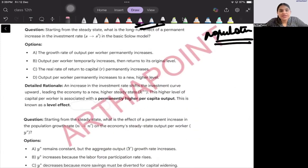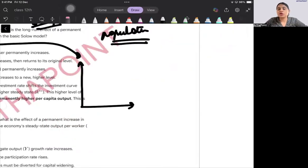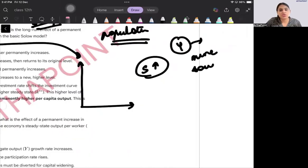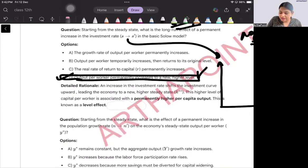Starting from the steady state, what is the long run effect of permanent increase in investment? When the investment increases, savings rate increases. It is going to have a level effect. Increase in savings rate will have a level effect. Whenever we draw a production function, when savings rate increases, out of the total output more amount is saved. So it has a level effect, not a growth effect. So the answer will be D: output per worker permanently increases to a new higher level, level effect, not a growth effect.